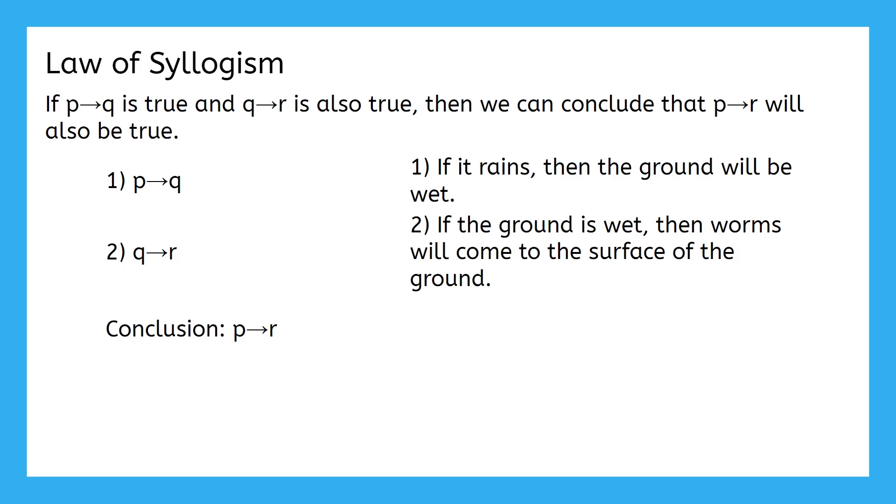Well, that means that if it rains, then the worms will come to the surface of the ground. The part we're skipping over here is why are they coming to the surface? Because the ground is wet.